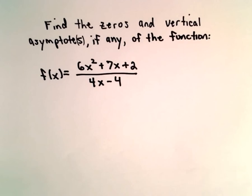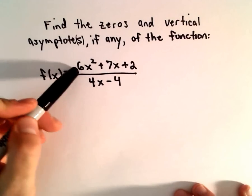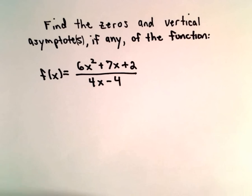To find the zeros and vertical asymptotes, the first thing I do for a rational function is I just start factoring. I factor the numerator, I factor the denominator.